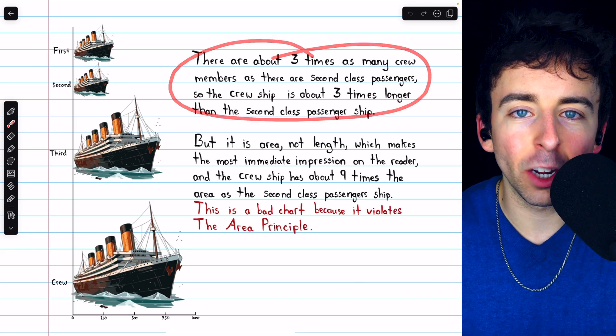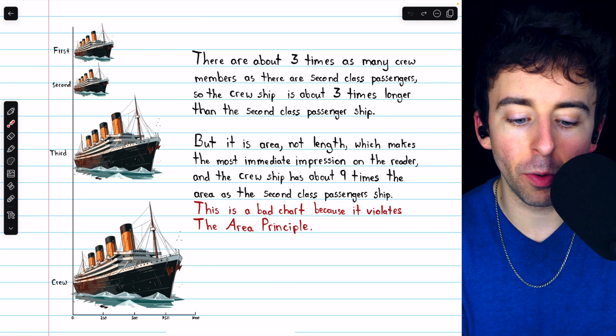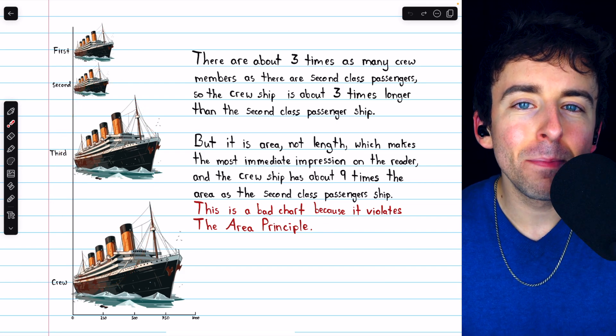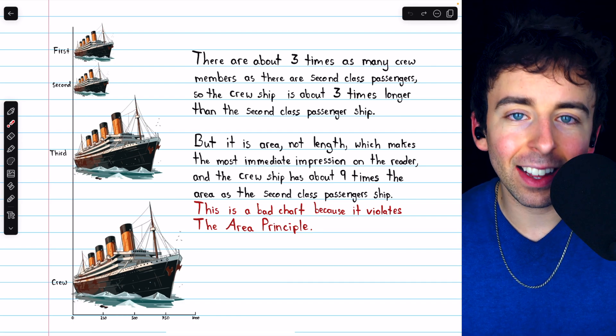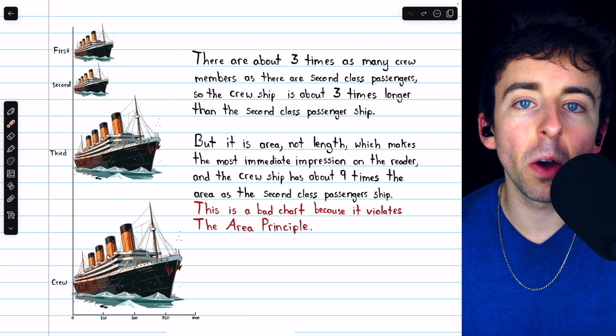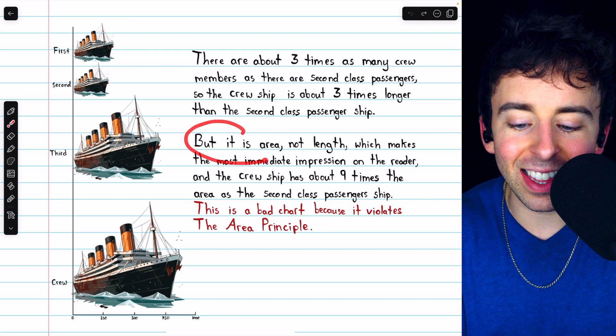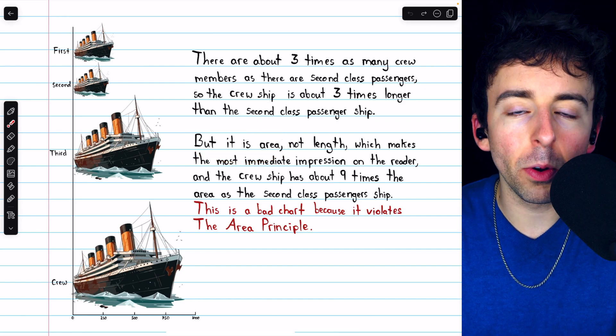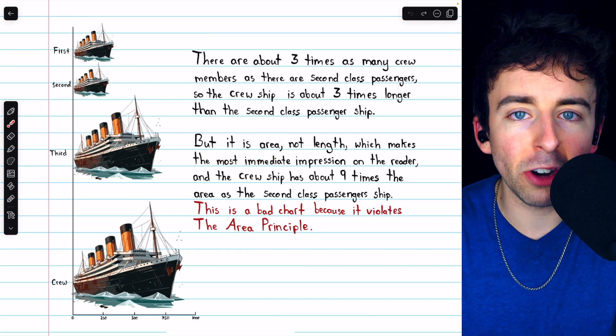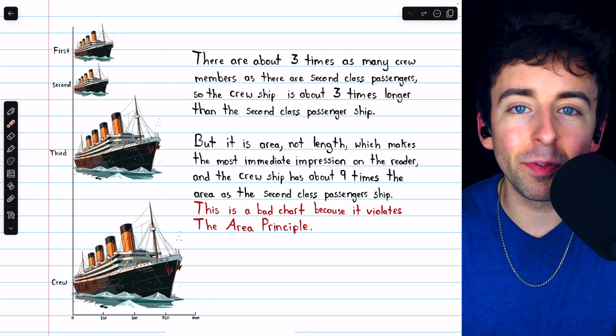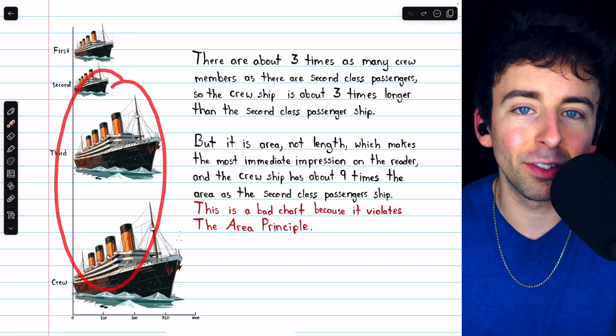So the lengths of the ships are accurate. You can read accurate information from this chart. But it makes a completely wrong impression because it's not the lengths of these ships that a viewer will notice most immediately. It is the area. This is a well-known fact that it's area which will make the most immediate and powerful impression on a reader. And you could probably feel that yourself looking at this chart.